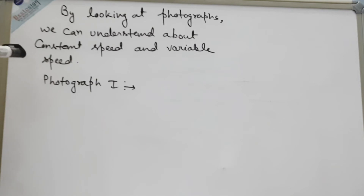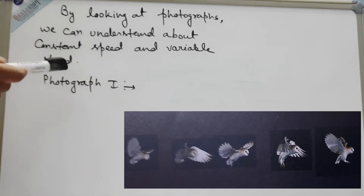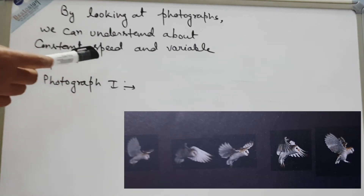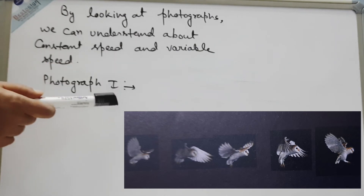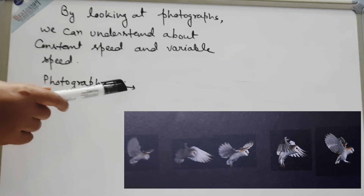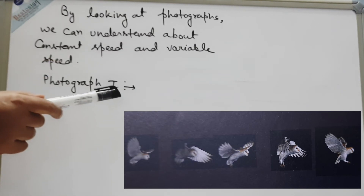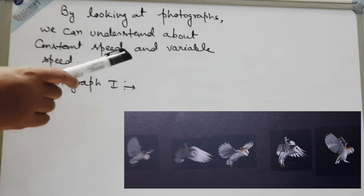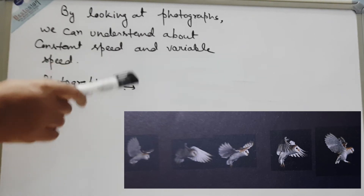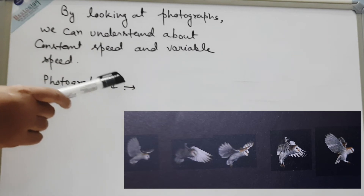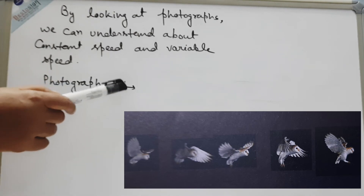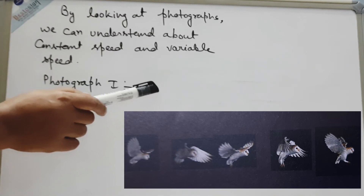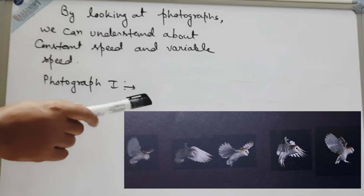By looking at photographs also, we can understand about constant speed and variable speed. In photograph 1, there is only one owl, not five. The camera has taken five pictures one after the other, taken at equal intervals of time. You can tell that the owl is flying from left to right at a constant speed because the pictures are spaced equally apart at equal intervals of time.